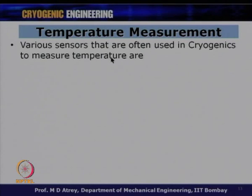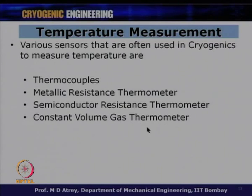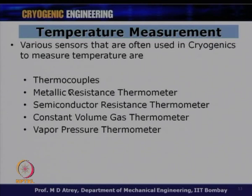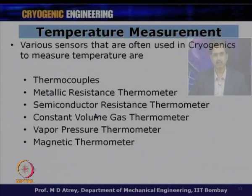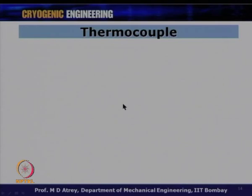Various sensors used in cryogenics to measure temperature are: thermocouples, metallic resistance thermometers, semiconductor resistance thermometers, constant volume gas thermometers, vapor pressure thermometers, and magnetic thermometers. Thermocouples are used across a wide range from high to low temperature. For most practical cryogenic applications, thermocouples, metallic resistance thermometers, and semiconductor resistance thermometers are used.